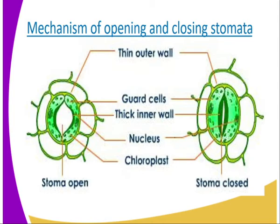At night, carbon dioxide is hardly used up as photosynthesis does not take place. Carbon dioxide therefore accumulates in the guard cells, resulting in the lowering of pH. This favors the conversion of glucose into starch. Starch is osmotically inactive, and therefore the guard cells do not gain water. Due to the resulting plasmolyzed state of the guard cells, the stomata therefore closes. The closure may not be complete, and some gaseous exchange may still take place at night.